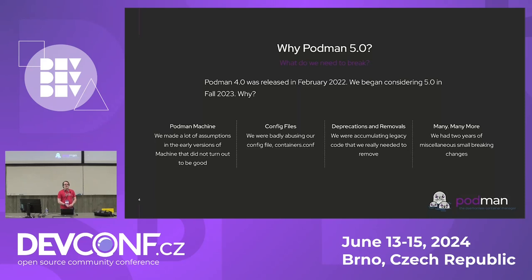So let's get down to it — why did we need to do Podman 5.0? We had a good, stable two years of Podman 4.0. The biggest reason is Podman Machine, that virtual machine functionality. When we first started doing it, we were very much a containers team; we didn't have much experience in virtual machines and we made some not particularly good assumptions. It needed a pretty big reworking, especially with the amount of people now using it. We now have Podman Desktop using Podman Machine, and it's getting increasingly common and popular.